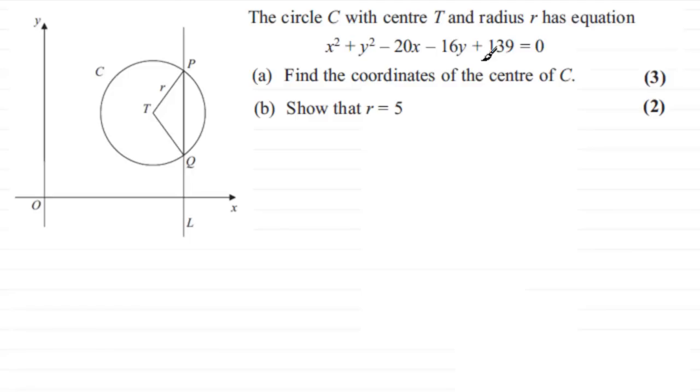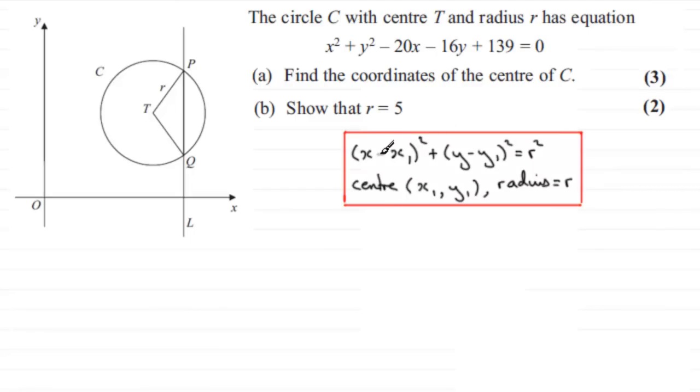Okay, well, let's just see if you did give this a go, how you might have got on. Well, first of all, you should be familiar with the equation of a circle, the form of it. It is (x - x₁)² + (y - y₁)² = r². And if you can get your equation of your circle in this format, then the centre is at (x₁, y₁) and the radius is r.